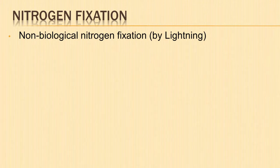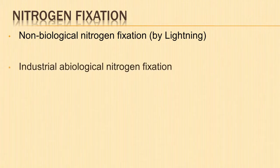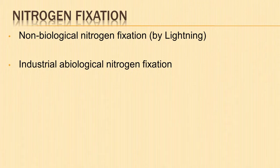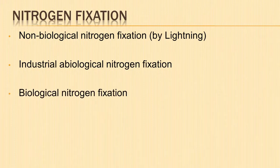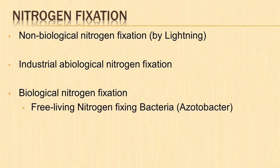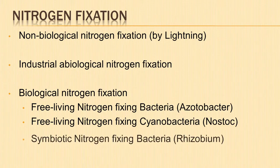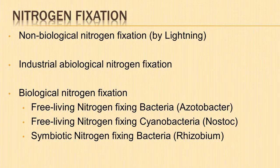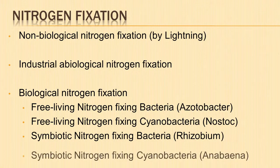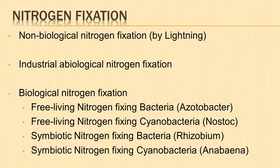Different types of nitrogen fixation are non-biological nitrogen fixation, industrial abiological nitrogen fixation, and biological nitrogen fixation. The atmospheric nitrogen may be fixed by free-living nitrogen-fixing bacteria like Azotobacter and Clostridium, or by free-living nitrogen-fixing cyanobacteria such as Anabaena and Nostoc. Atmospheric nitrogen can also be fixed by symbiotic nitrogen-fixing bacteria such as Rhizobium and Frankia, and by symbiotic nitrogen-fixing cyanobacteria like Anabaena and Nostoc.